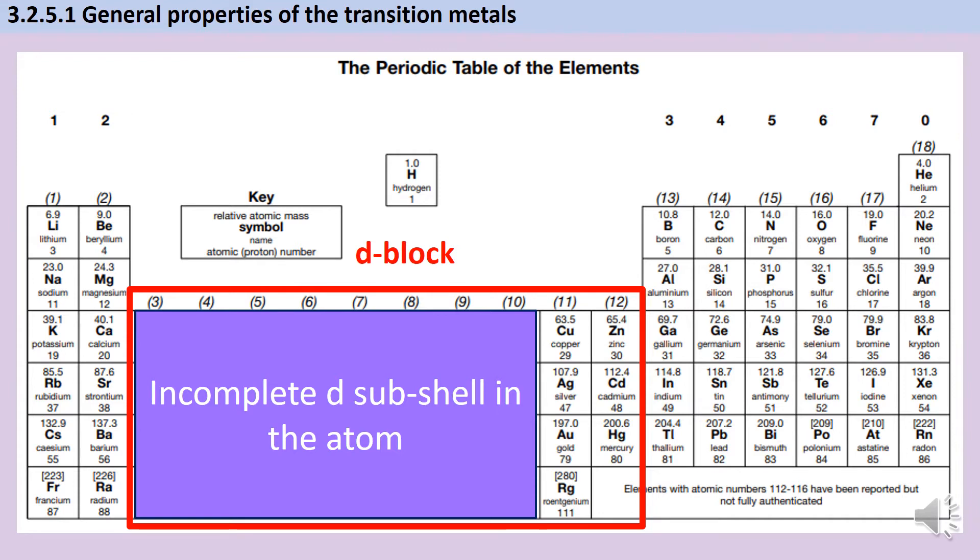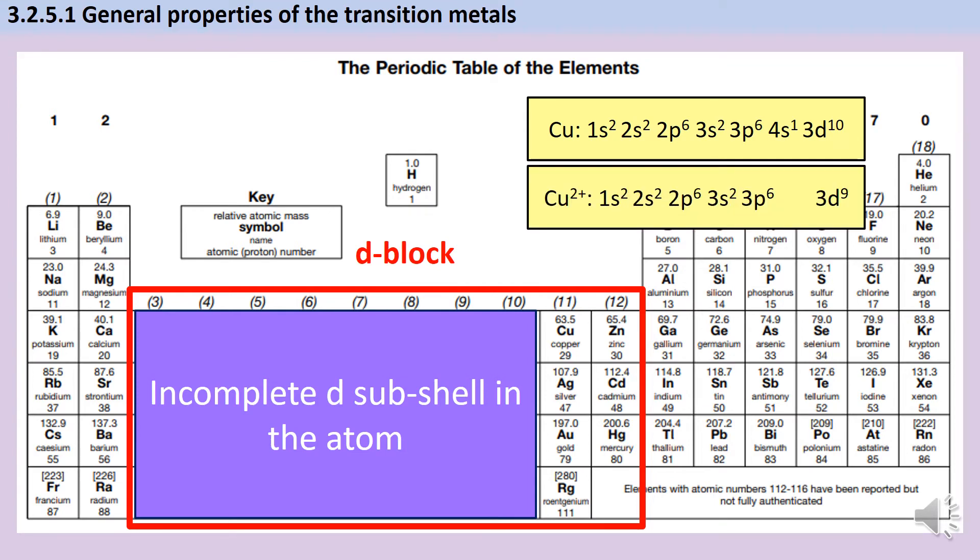When we get to Copper, the same thing happens as happened earlier. Instead of having nine electrons in its 3d subshell, copper actually has 10 and it only has one electron in the 4s subshell instead. So if we just looked at the atoms, copper wouldn't be a transition metal according to our definition. But when copper forms ions, its most stable ion is a 2+ ion. To make that 2+ ion, we lose that 4s electron and also lose a further electron from the 3d subshell. So the stable ion of copper has an incomplete d subshell, and therefore copper is a transition metal.